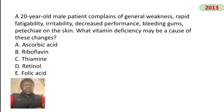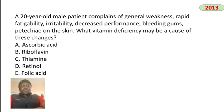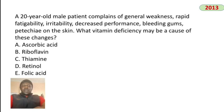A 20-year-old male with general weakness, rapid fatiguability, irritability, decreased performance, and bleeding gums/skin hemorrhages has vitamin C (ascorbic acid) deficiency. Thiamine (B1) and riboflavin are not relevant here. The answer is vitamin C (ascorbic acid).